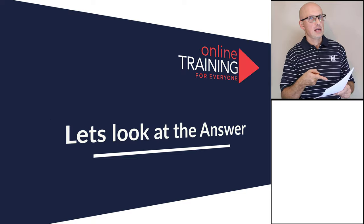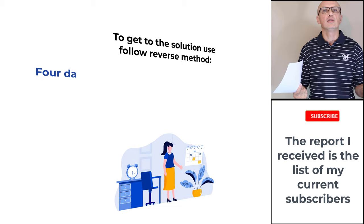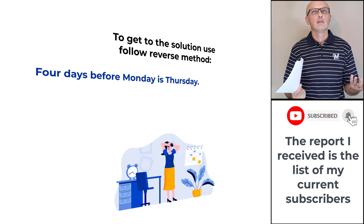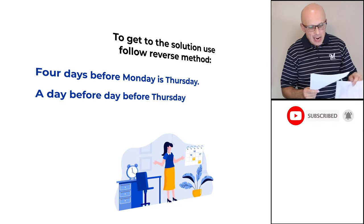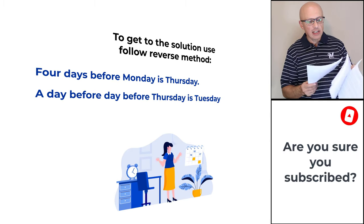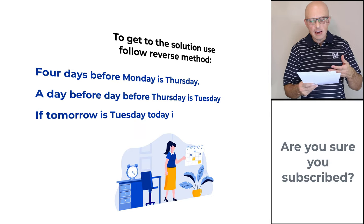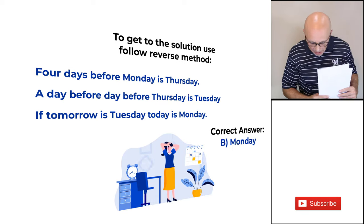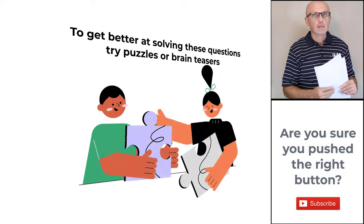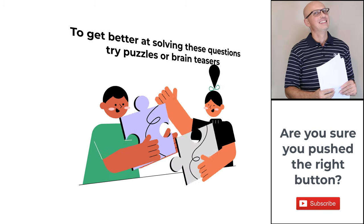To solve these types of problems, analyze them in reverse. Four days before Monday is Thursday. The day before the day before Thursday is Tuesday. If the day after tomorrow is Tuesday, then tomorrow is Monday, meaning today is Monday. The correct answer is choice B, Monday.